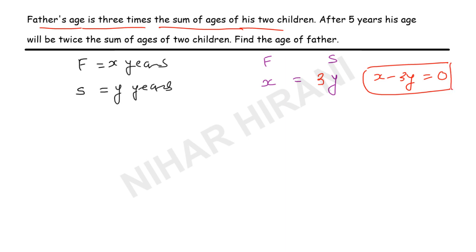Now let's work on statement two: after five years. Today, the present age of father is x years and the sum of the ages of his two children is y years.